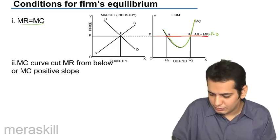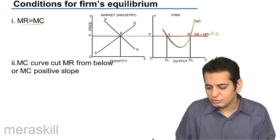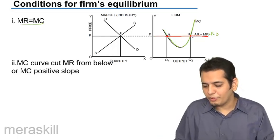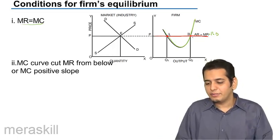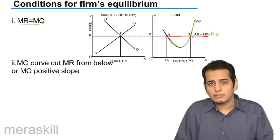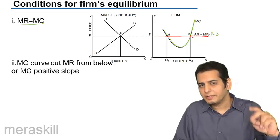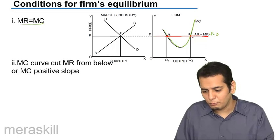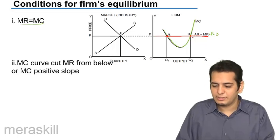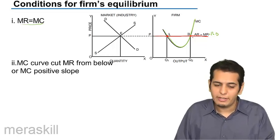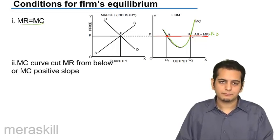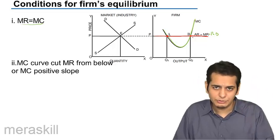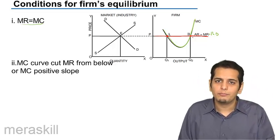Yes, there are two points. First is point A, and second is point B. We can see that both these curves are meeting at two points, A and B. So at both points, I can say MR is equal to MC. This is the first order condition for equilibrium.